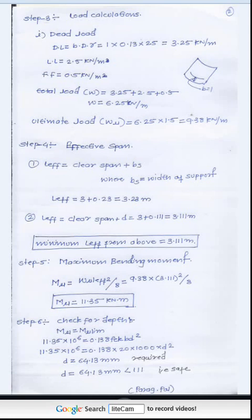Step 3: Load calculation. Dead load = 1 × 0.130 × 25 = 3.25 kN/m. Live load = 2.5 kN/m (given). Floor finish = 0.5 kN/m (given). Total load = dead load + live load + floor finish = 6.25 kN/m. Ultimate load = total load × factor of safety = 9.38 kN/m.